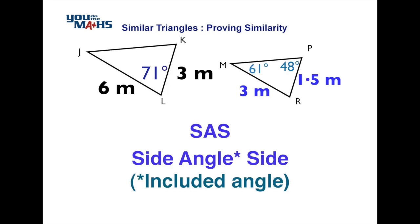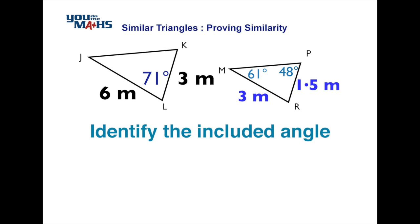The similarity condition here is called side-angle-side. The important thing to remember, as the name suggests, is that the angle must be between the pairs of sides we're looking at. We need to identify the pairs of sides and the angle between them — in this case, 71 degrees is clearly between the 6 metres and 3 metres.